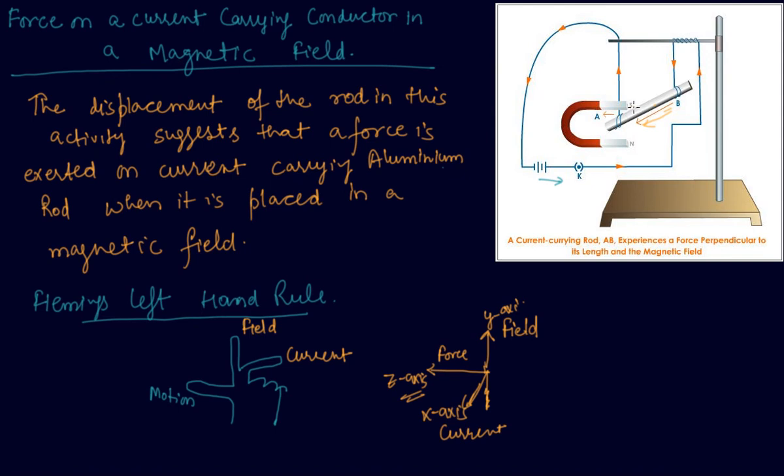According to this rule, stretch the thumb, forefinger and the middle finger of your left hand such that they are mutually perpendicular to each other, and if the first finger points in the direction of the magnetic field, and the second finger in the direction of the current, then the thumb will point in the direction of motion or the force acting on the object.